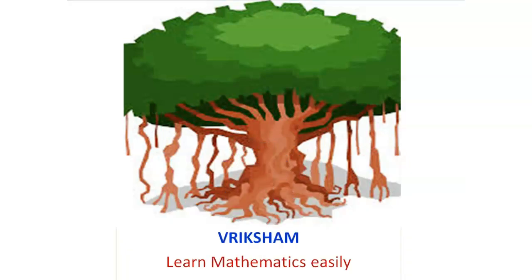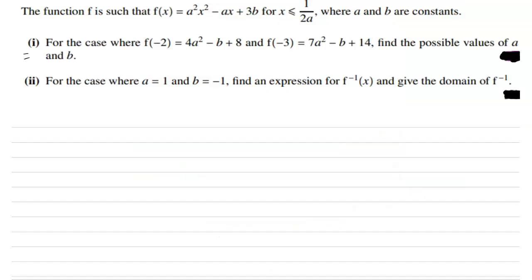Hi viewers, welcome to Brixham channel — learn mathematics easily. Consider the equation: the function f is such that f(x) = a²x² - ax + 3b for x less than or equal to 1/(2a), where a and b are constants.